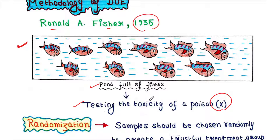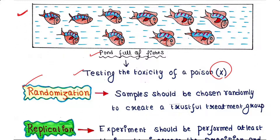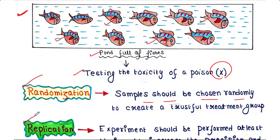According to Ronald A. Fisher, the first methodology is randomization. Randomization is a best practice in order to create a trustworthy treatment group. Samples should be chosen randomly to reduce bias — meaning we choose this fish, this fish, this fish, and this fish randomly to reduce biasness.